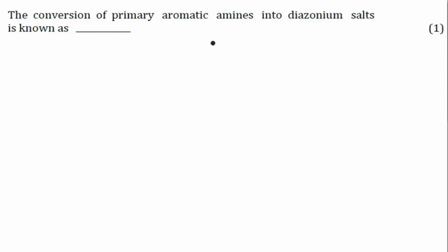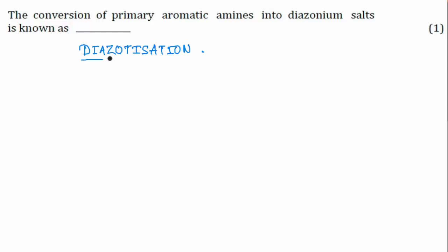Next question: the conversion of primary aromatic amines into diazonium salt is known as what process? This process is known as diazotization.